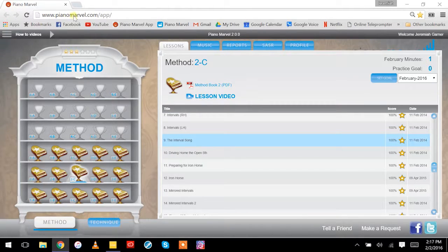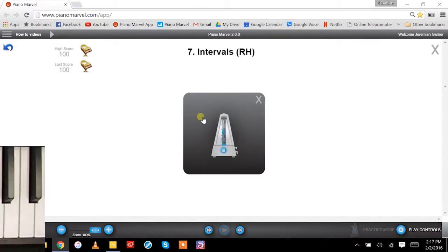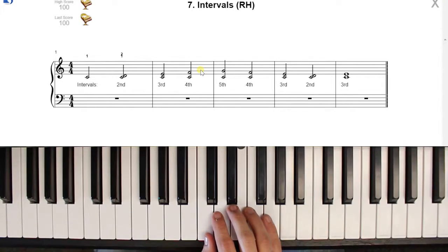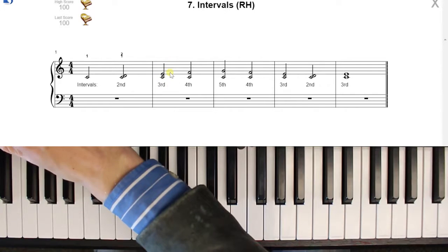So here we are in the 2C trophy. What we're going to do is we're going to open up number 7, 8, and 9 and take a look at our intervals. Let's go ahead and open up number 7. So what intervals are, they're pretty much just one note and another note played at the same time with spacing in between them. Let's go ahead and take a look at our third interval.